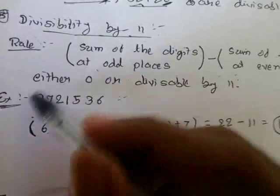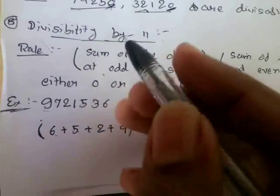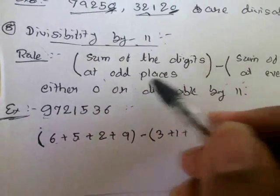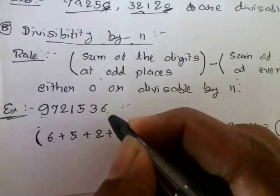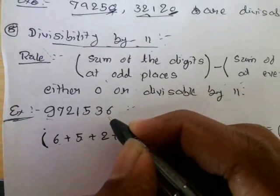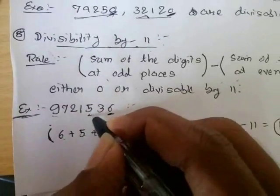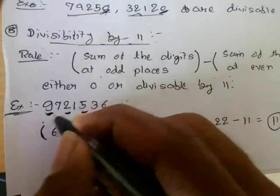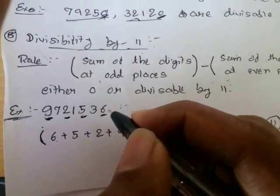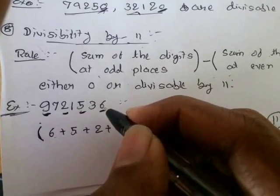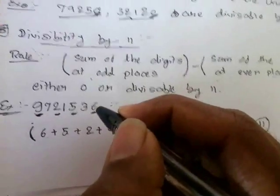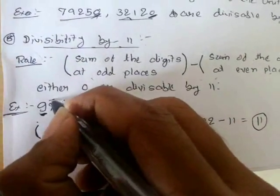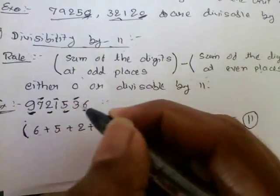Let's take an example. We will first identify which digits are at odd places. Starting from the right-hand side: the first, third, fifth, and seventh positions are the odd places. The digits at odd places are identified, and then 3, 1, and 7 are at the even places.